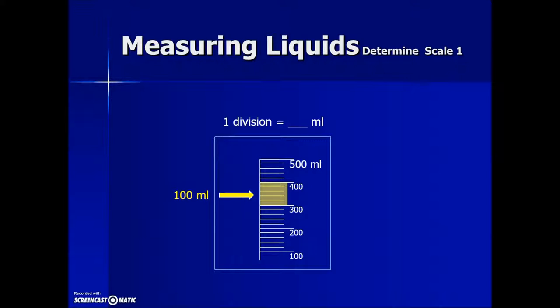Then we will count the number of tick marks between those two scale marks. There are five tick marks or divisions.